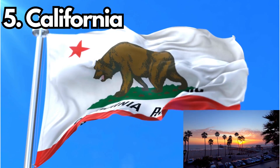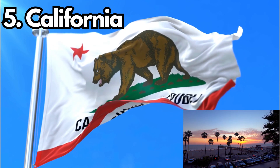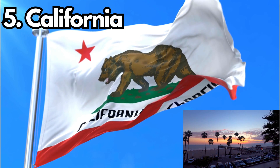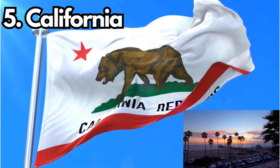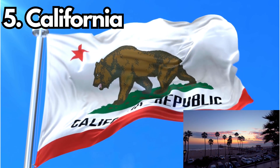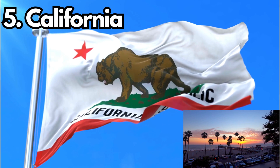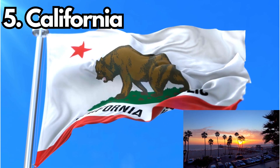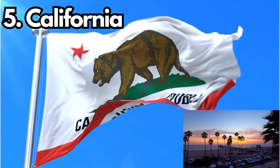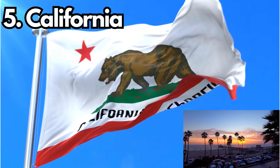5. California. Design: The California state flag features a white field with a red stripe along the bottom, a red star in the upper hoist corner, and a grizzly bear walking on green grass. Meaning: The red stripe represents courage, the star represents sovereignty, and the grizzly bear symbolizes strength. History: The flag's design was first adopted in 1846 during the Bear Flag Revolt.